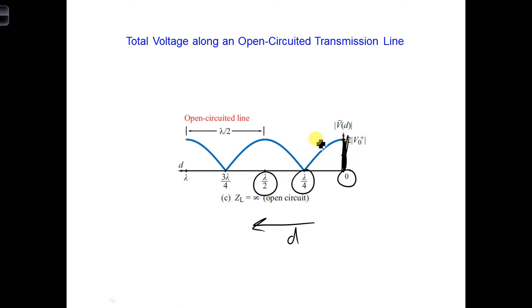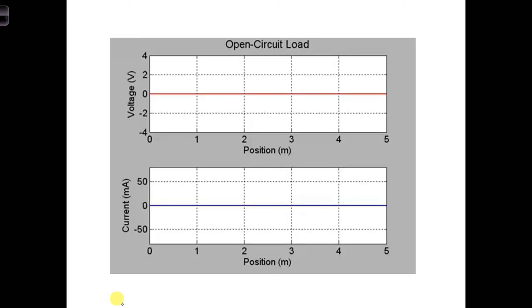And at d equals lambda over 4, the voltage is 0. And so it's just going to stay 0 over all time. We can see this a little bit better